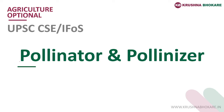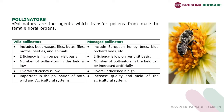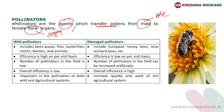Hello students, today we are understanding the concept of pollinator and the pollinizer. This concept is important for the UPSC Civil Service Examination and Indian Forest Service. Pollinators are the agents which transfer pollens from the male to the female floral organ. The male floral organ is the anther, and the female floral organ is the stigma. On the basis of origin, pollinators are classified into two types.